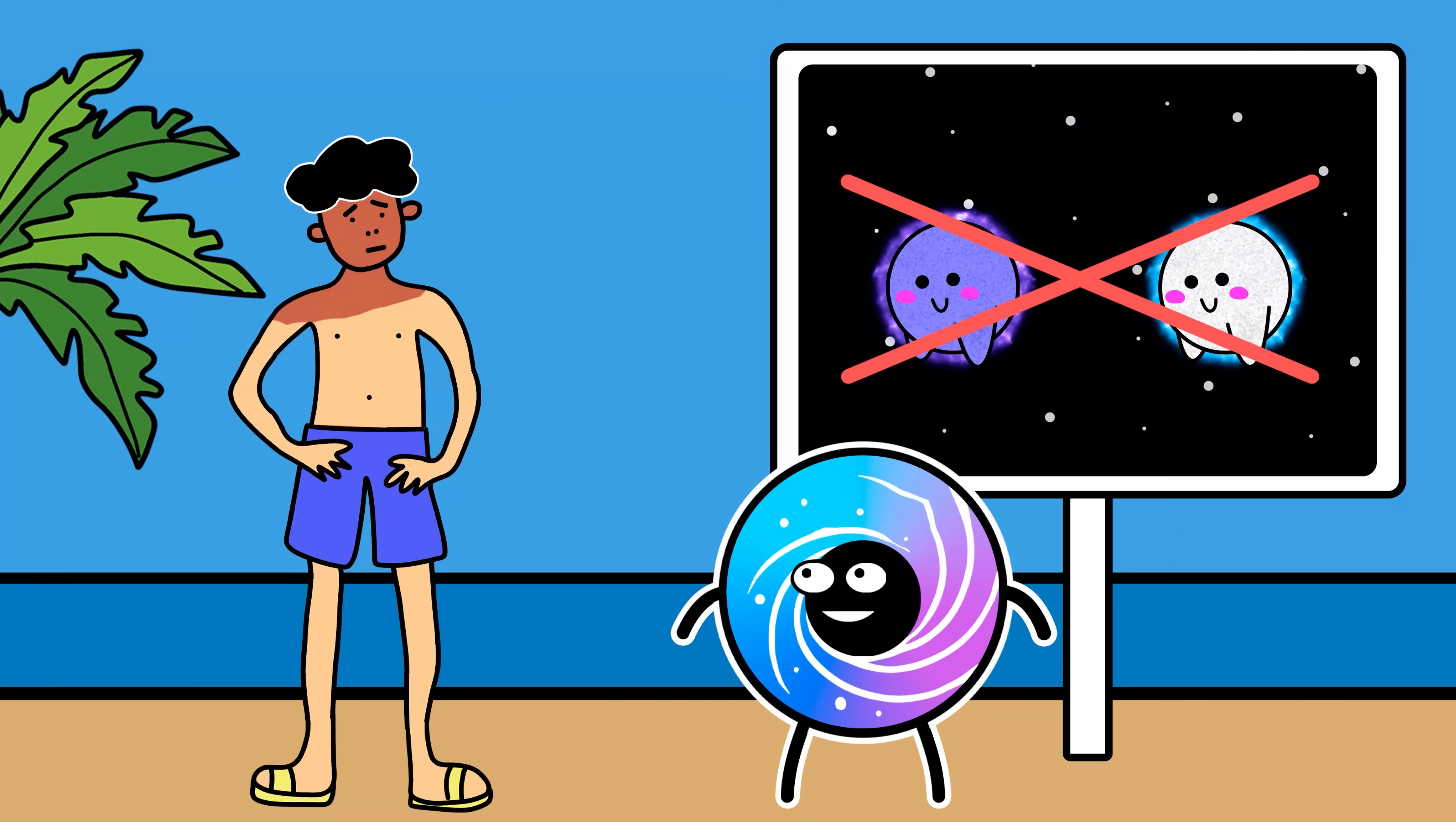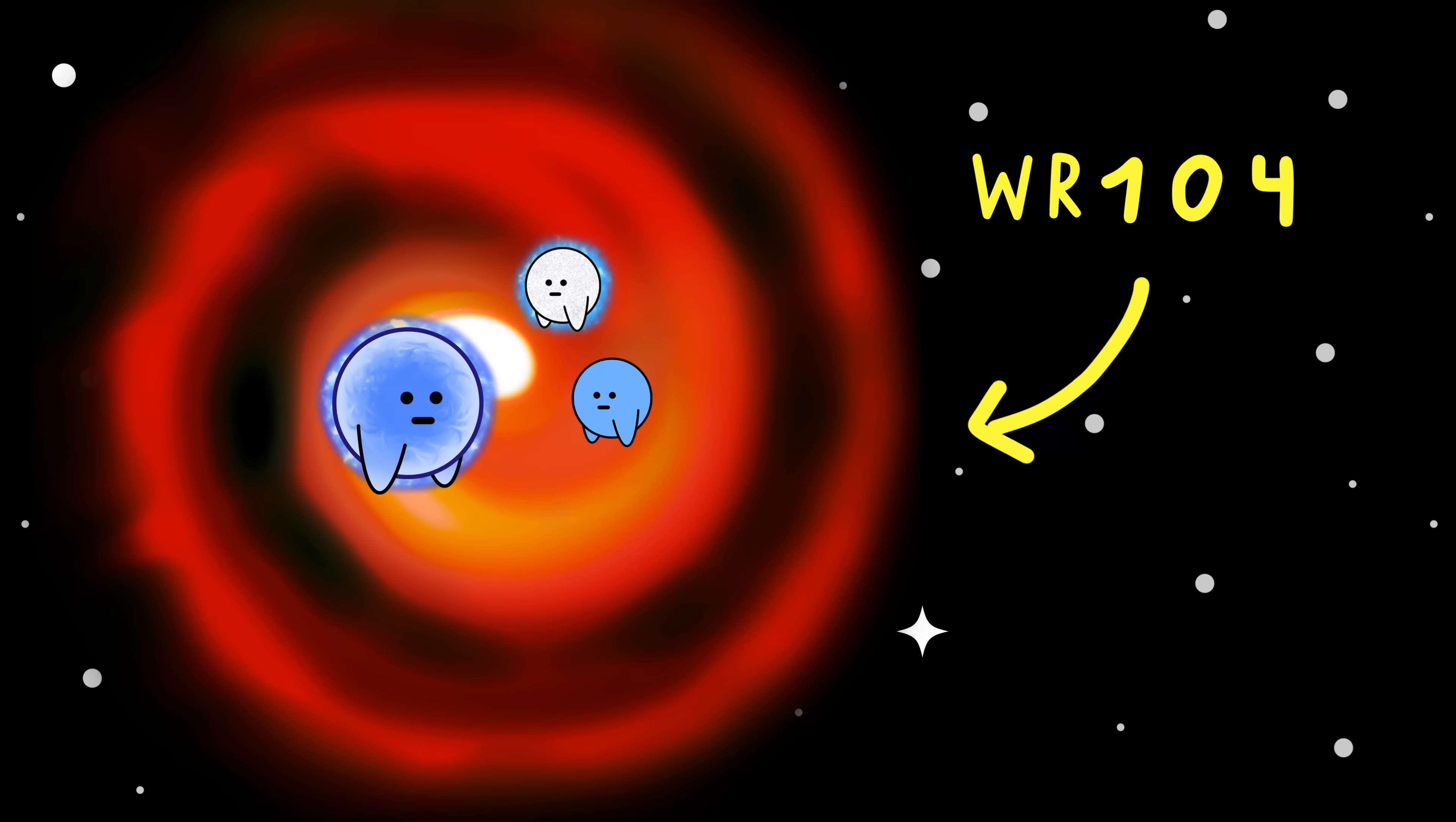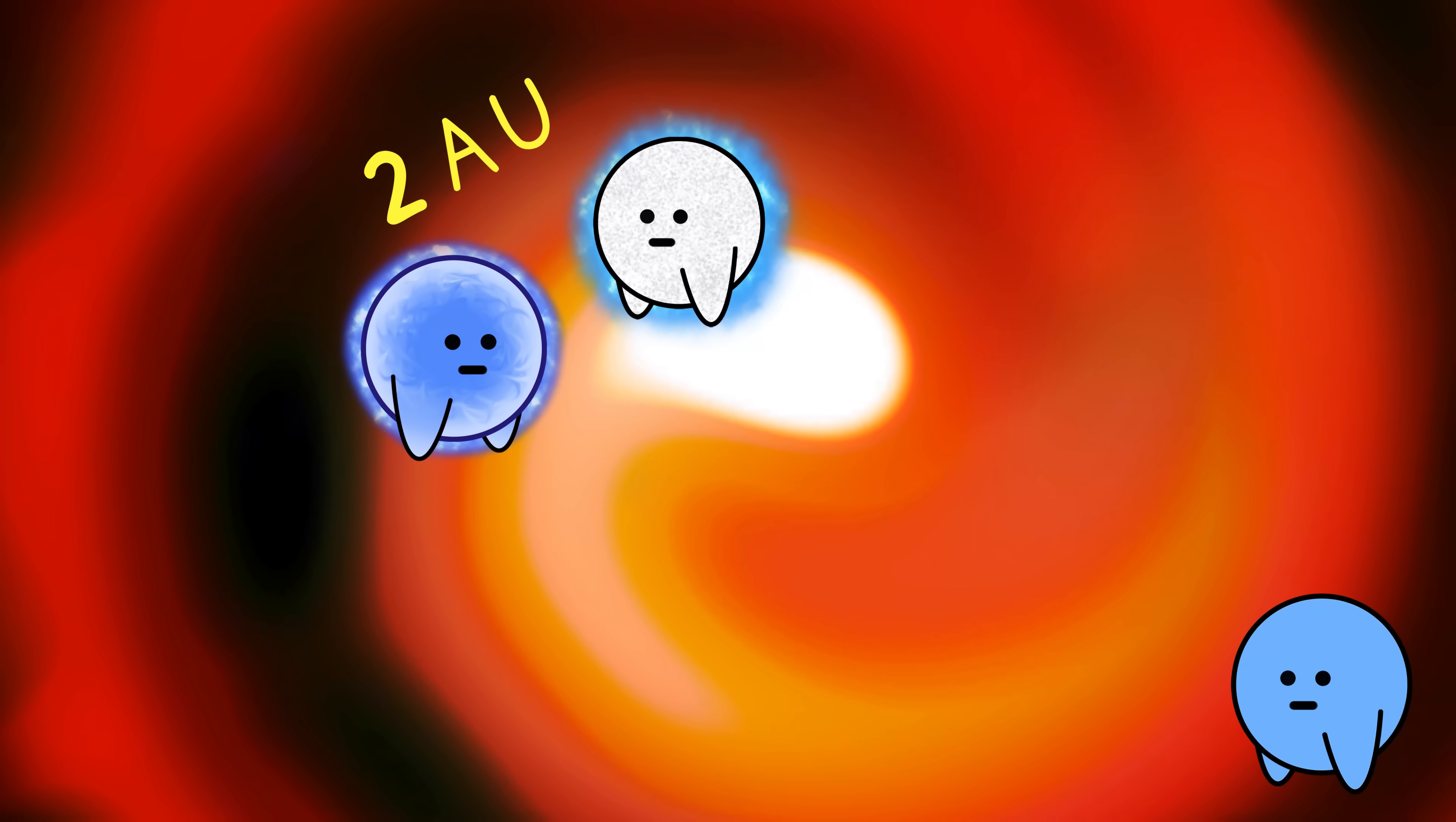Two stars? Nah, that's too boring. Let's add another one. A third star. WR-104 is actually a triple system anchored by a Wolf-Rayet star and two others, including one far away O-type star. It's not like Earth could technically orbit any of these stars.